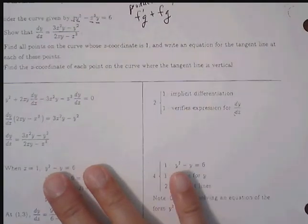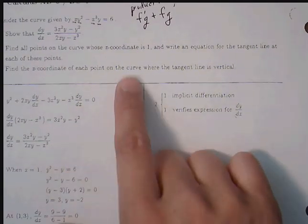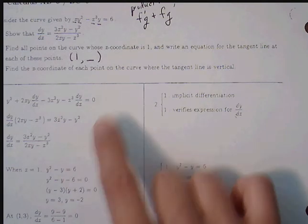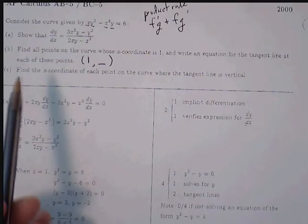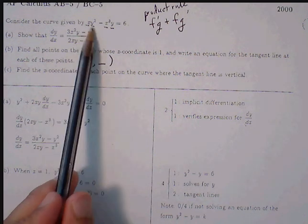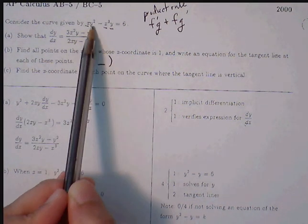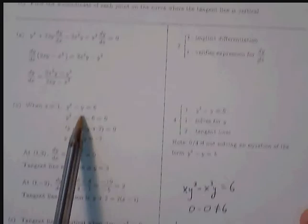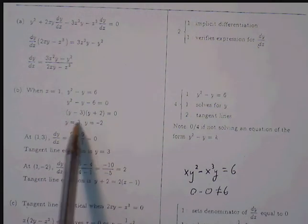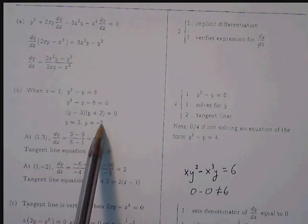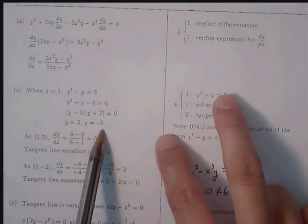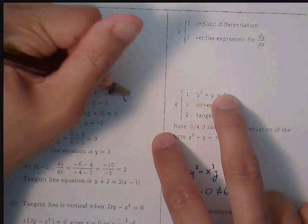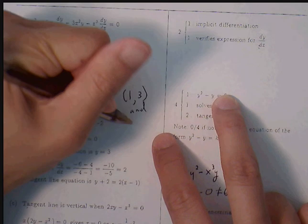Part B: find all points on the curve whose x-coordinate is 1 — meaning we need the ordered pairs where x equals 1. We plug x equals 1 into the original equation: 1·y² minus 1·y equals 6, so y² minus y minus 6 equals 0. Factoring gives y equals 3 and y equals negative 2. So we have two ordered pairs: (1, 3) and (1, −2).